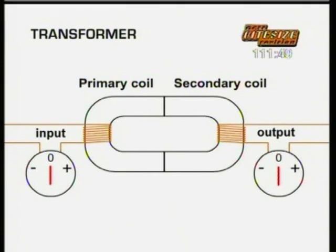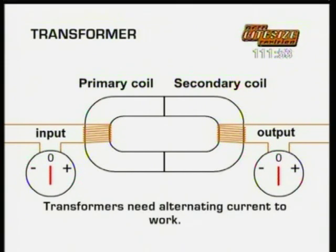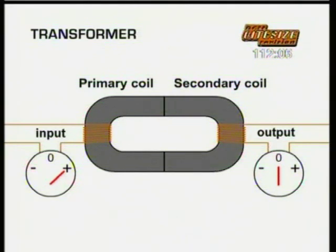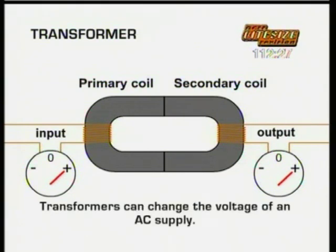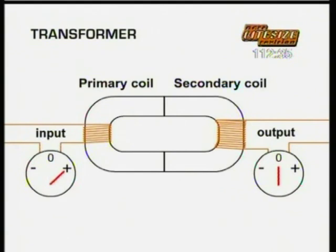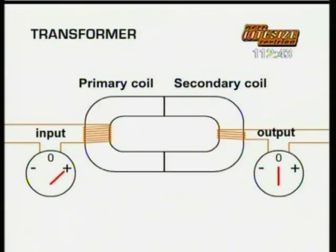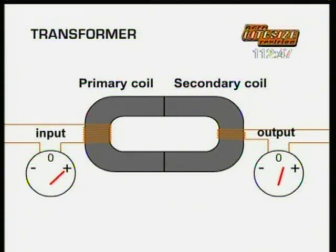One more useful electromagnetic device is a transformer. Transformers need alternating current to work. An alternating input current flowing in the primary coil creates a changing magnetic field in the soft iron core. This induces a magnetic field in the core of the secondary coil, which induces an alternating output current. Remember, the primary and secondary coils are not connected electrically — the link between them is the magnetic field through the iron core. The main use of a transformer is to change the voltage of an AC supply. If there are more turns in the secondary coil than the primary, the voltage coming out is greater — a step-up transformer. If there are fewer turns in the secondary coil, the voltage coming out is less — a step-down transformer.